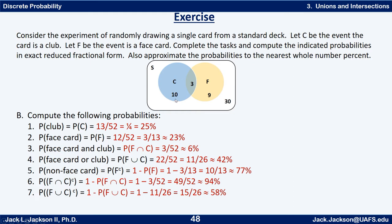For a face card or a club, we add the 10, the 3, and the 9 together for a total of 22 out of 52, which reduces to 11/26, or about 42%. For the non-face cards — the complement of F — it's one minus the probability of a face card. We could get non-face cards by adding the 30 and the 10 to get 40 out of 52. Or we already know P(F) = 3/13, so one minus 3/13 = 10/13, or approximately 77%.